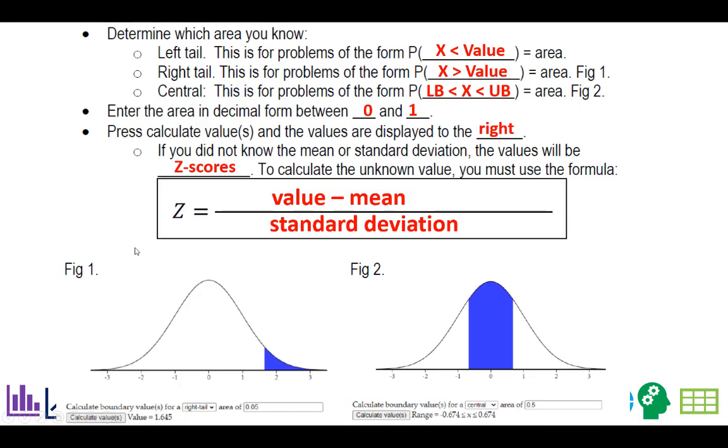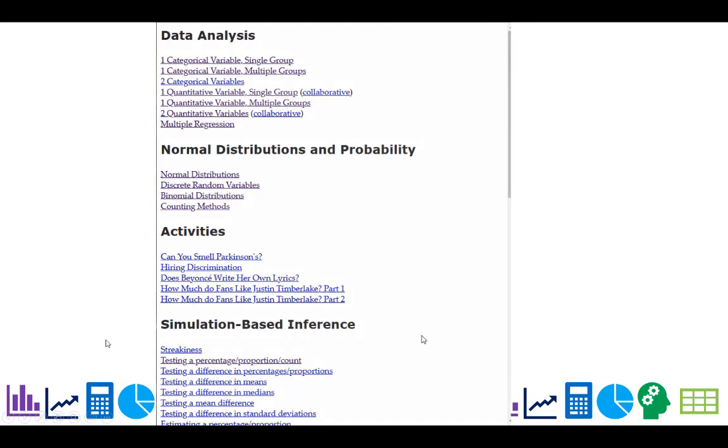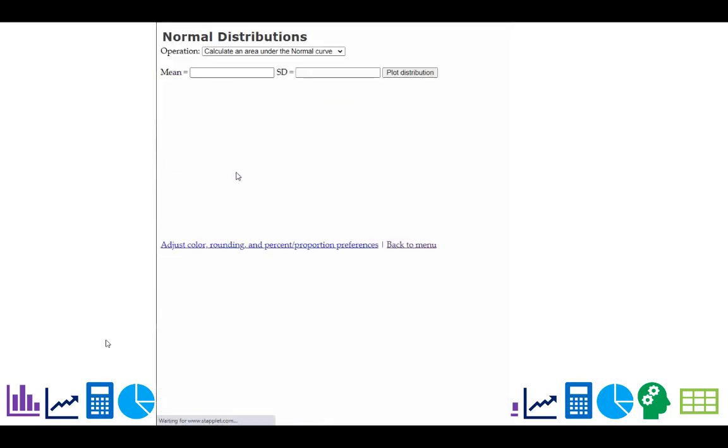So we'll do a quick run through. This is how you can use the normal distribution Staplet to determine a value corresponding to an area. If I revisit the tomato box filler problem in our notes...